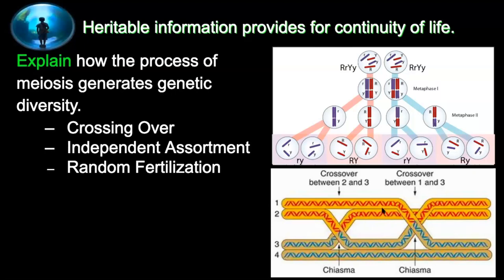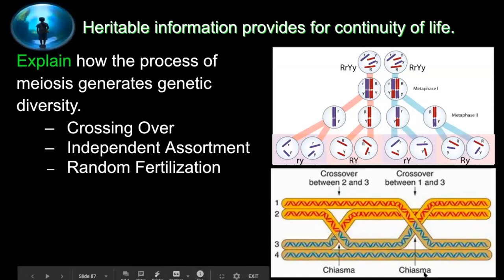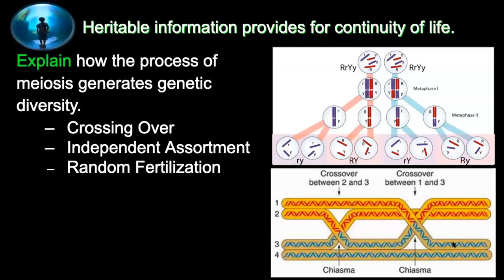These two chromosomes are identical — say they're mom's — and these two are identical and say they're dad's. But during synapsis of the tetrad, there's crossing over occurring, called a chiasma. That creates genetic diversity when pieces of dad's chromosome get broken off and reattached to mom's. You should be well familiar with prophase one and crossing over; you don't really have to know anything else happening in prophase.